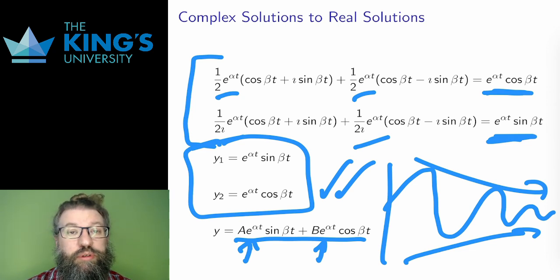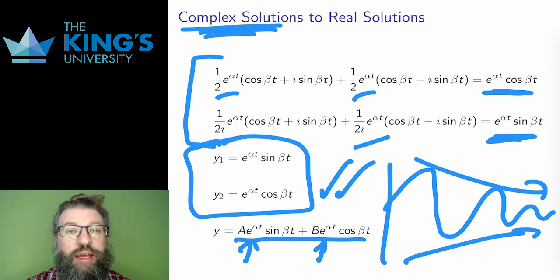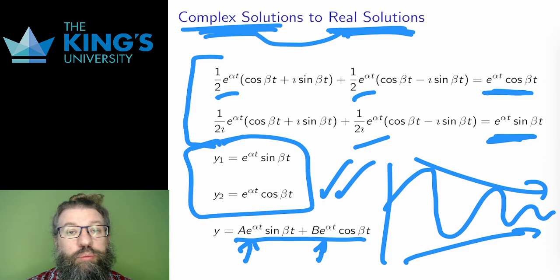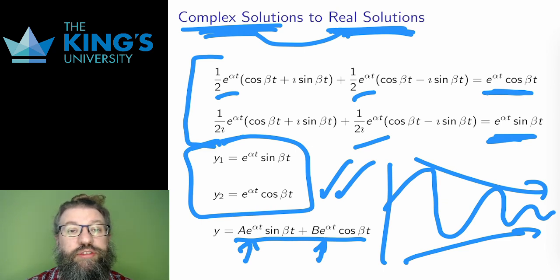Something amazing has happened here. To solve the system and get these solutions, I had to detour through the complex numbers and use Euler's formula to turn the complex solution into sine and cosine. Nothing about the system implies that complex numbers should be necessary, but they are fundamentally a part of the solution. I need to go through the complex numbers to understand the system. This is even more important for electric circuits — this is the first place where it is clear that an AC circuit needs complex numbers for its description. And this is the start of the fundamental and essential way that electricity is described by complex number functions.